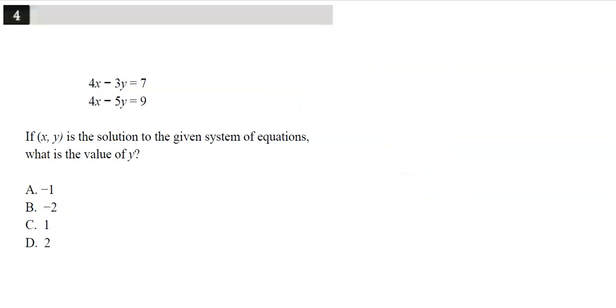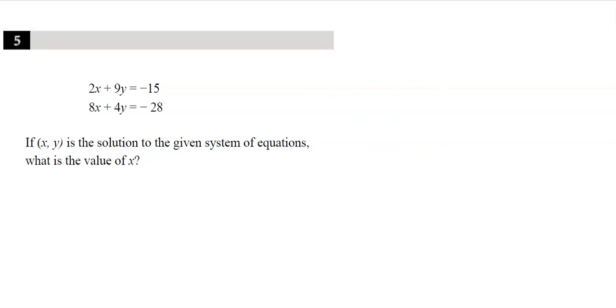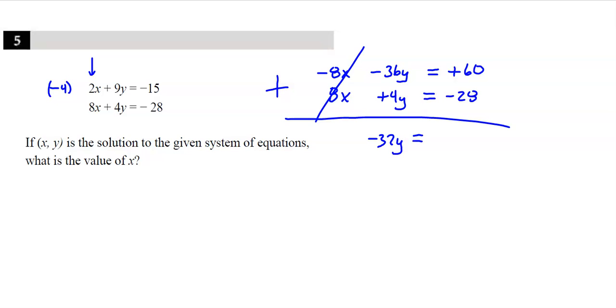Alright, moving on down. Number five. Another one looks good for elimination. I think I could turn that 2 into a negative 8 to get my opposites that I want. That's always my goal. So negative 8X minus 36Y, positive 60. Over here I get positive 8X, positive 4Y, negative 28. Didn't do anything with that one. Add them up. Eliminate those X's. Negative 32Y equals negative 32. Divide, divide. Y equals positive 1.